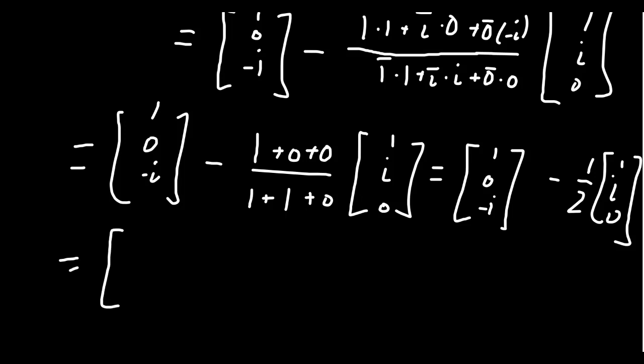We're going to get 1 minus 1 half, which is 1 half. We get 0 minus i halves, which is minus i halves. And then we're going to get negative i minus 0. So we get negative i right there.